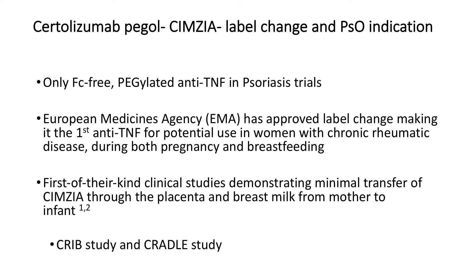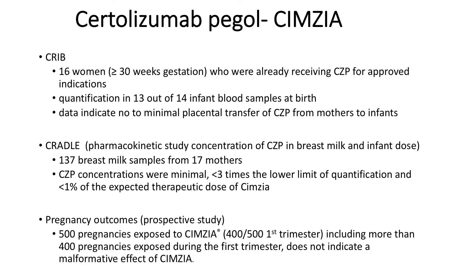They are also active in psoriasis trials. The reason they can make this safety claim in pregnancy and breastfeeding is based on two studies: CRIB and CRADLE. CRIB followed women on certolizumab and showed that maternal-to-placental transfer was minimal. CRADLE is a pharmacokinetic study examining breast milk samples. Looking at over 500 pregnancies, the data did not indicate any malformations. This may be the drug of choice for the young woman with active disease who is trying to raise a family.